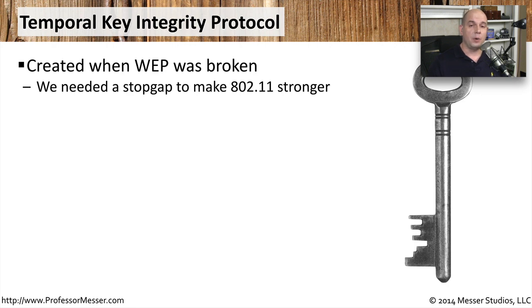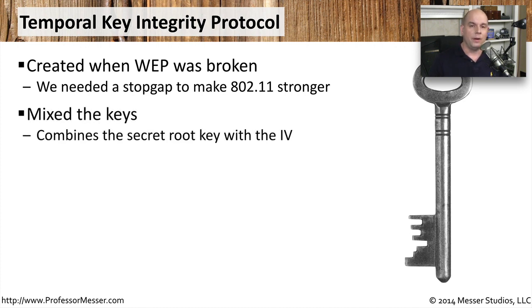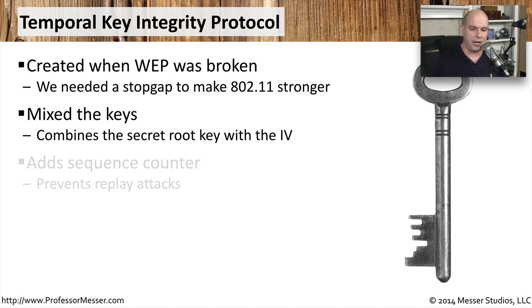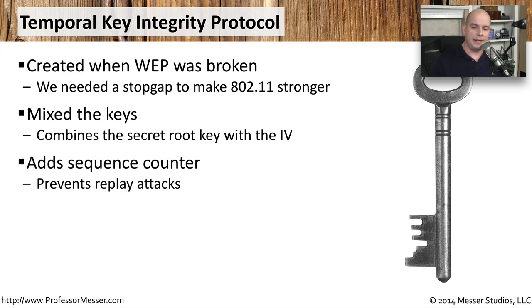When we ran into cryptographic problems with WEP, we needed something to fill the gaps, so we created TKIP. This allowed us to make 802.11 networks more secure without the cryptographic problems of WEP. One key feature of TKIP is that it mixes keys together — it takes the secret root key and mixes it with the initialization vector, making the key much more secure because it was constantly changing. TKIP also includes sequence counters, which are useful to avoid replay attacks.